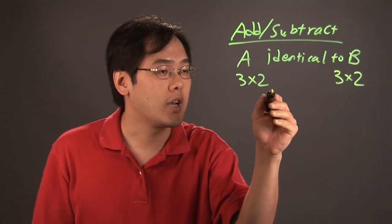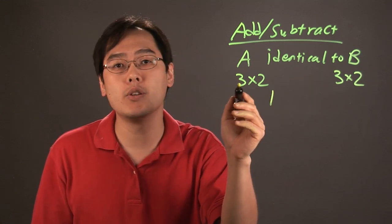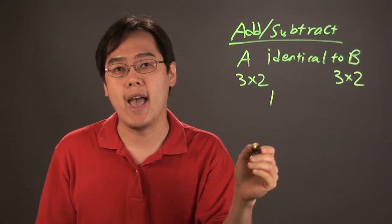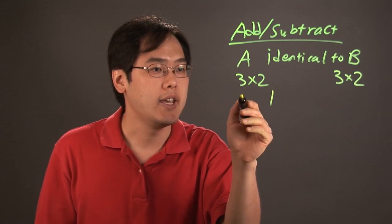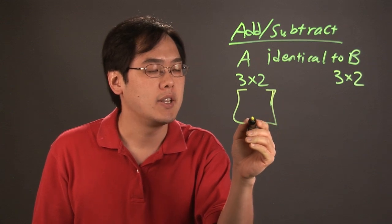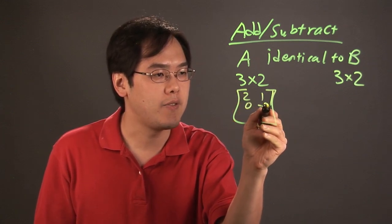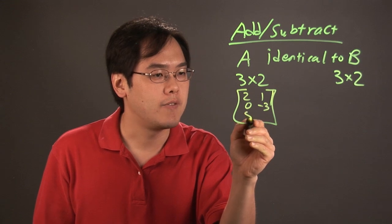When it comes to adding and subtracting them, all you need to do is add and subtract the corresponding entries. So if you had a 3 by 2 matrix, you have 2, 1, 0, negative 3, 5, 2,